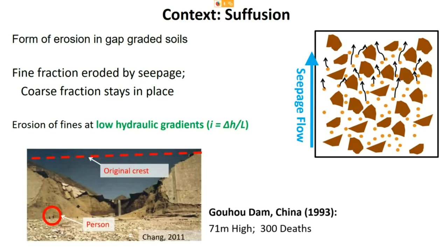An example of the danger suffusion poses is the Guhu Dam in China, built from a soil susceptible to suffusion. This is part of the reason it collapsed when the reservoir was first filled in the 90s. The collapse of this 71-meter-high dam caused a deluge downstream resulting in 300 deaths — that gives the engineering context.